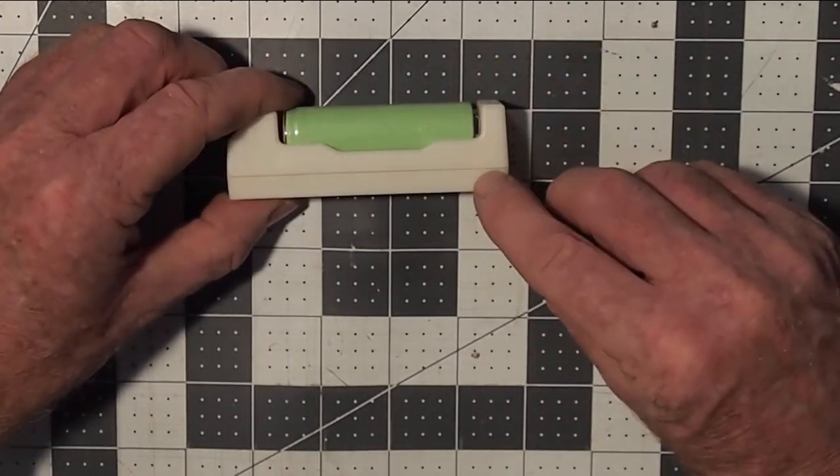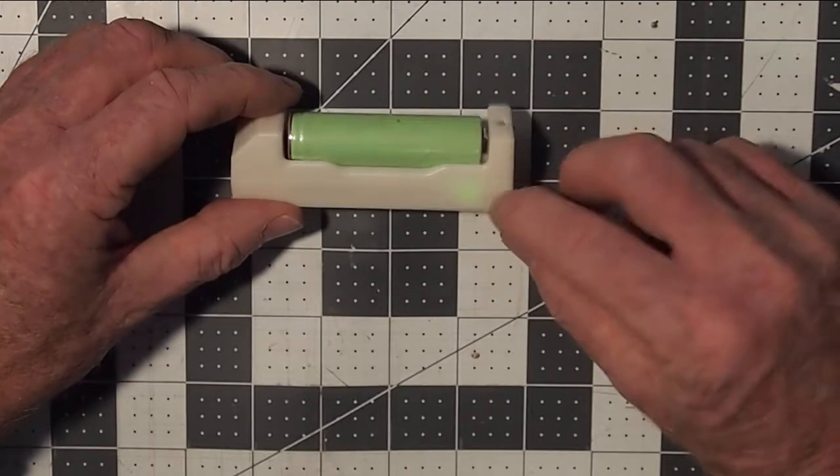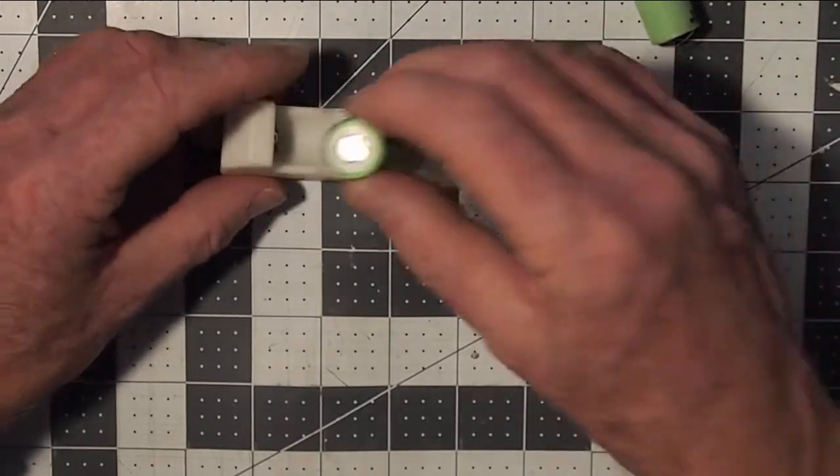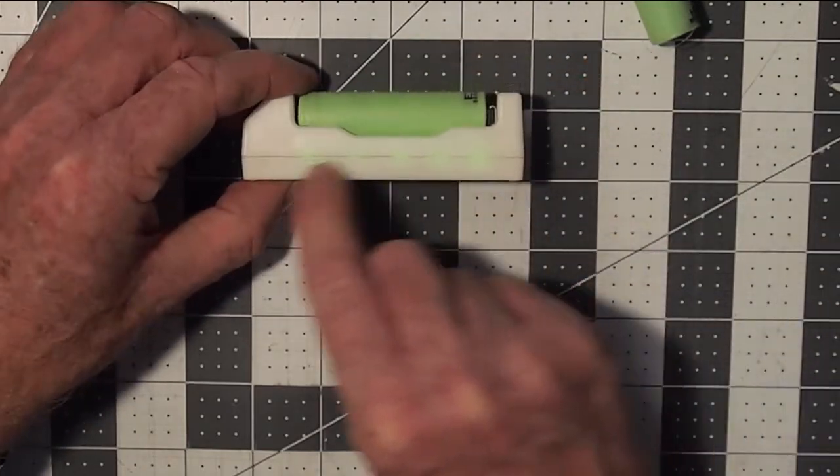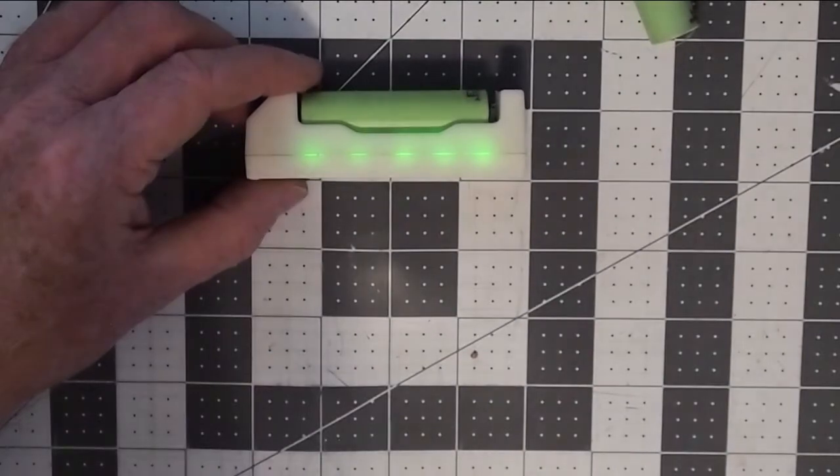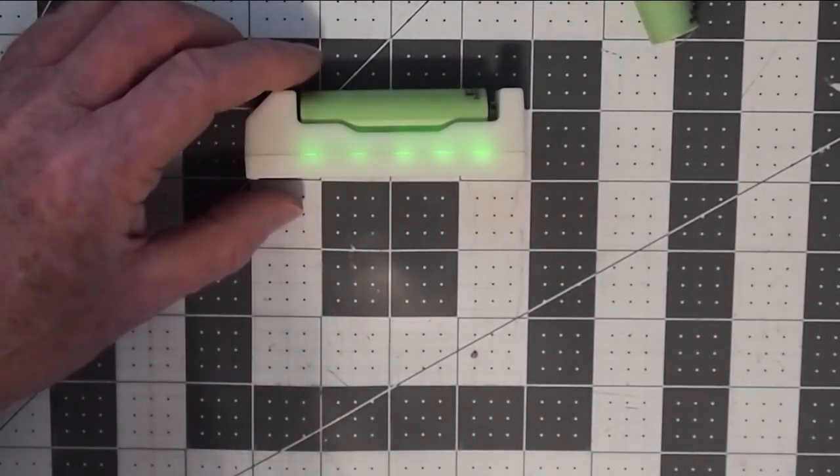So you see the green flashing light there. That's telling me the cell is almost discharged. And when I put this one in, all the green lights there means this battery is fully charged. So it has a charge indicator on it.